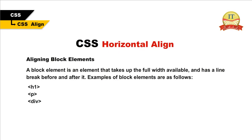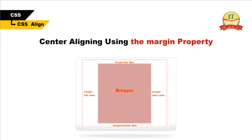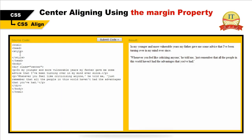Aligning block elements. A block element takes up the full width available and has a line break before and after it — examples are h1, p, and div. In this section, we will learn how to horizontally align block elements for layout purposes. Center aligning using the margin property: block elements can be centered by setting the left and right margins to auto, which splits the available margin equally to produce a centered element.